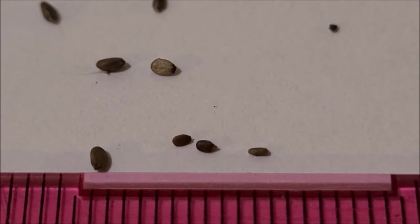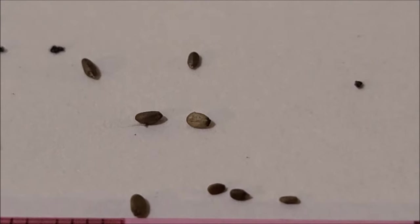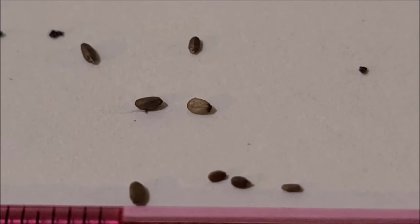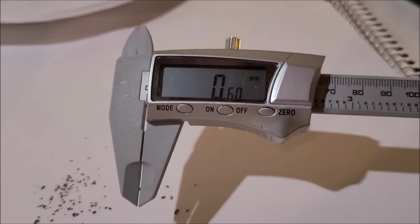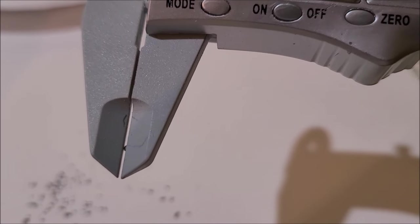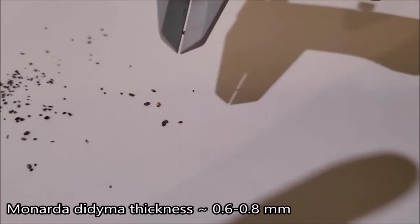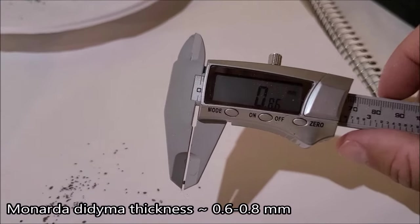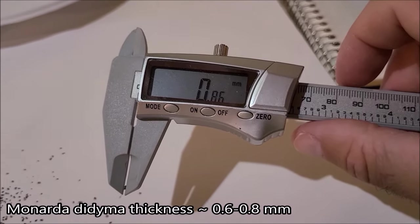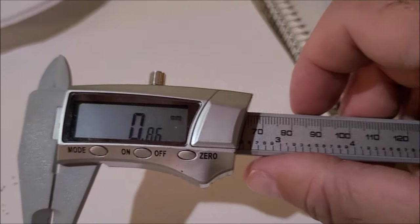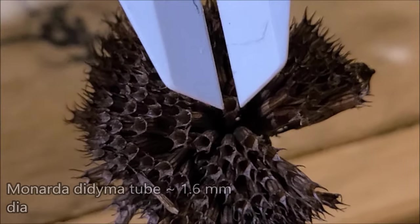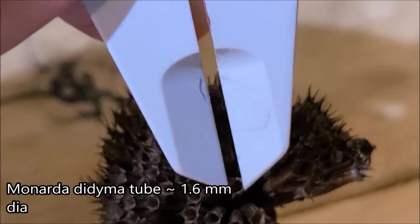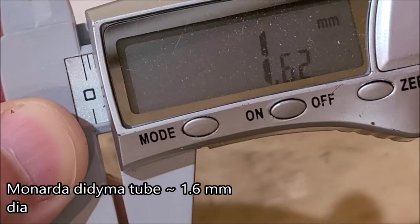Now if we look at the red bee balm seeds and start looking at what look like fully formed healthy seeds to me and start measuring those, I can see a big difference in them, which is kind of puzzling. I'll measure some of the small ones and some of the larger ones. When I measure the small ones, they're about 0.6 millimeters thick, which is not too different than the Monarda fistulosa. But when I do a bigger one, it's 0.86 millimeters, which is a little more than 60% bigger. If I look at the tube diameter on the red bee balm, it's 1.6 millimeters.